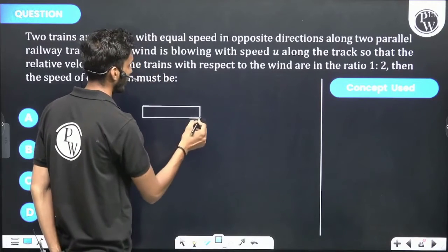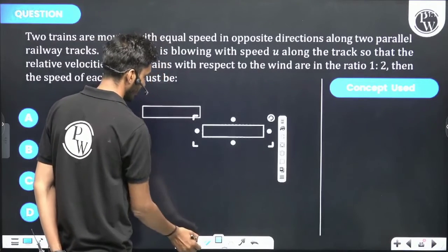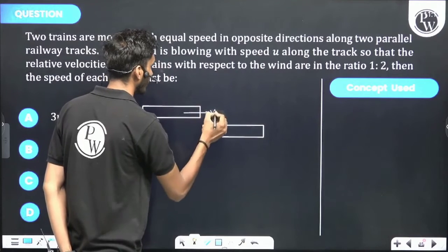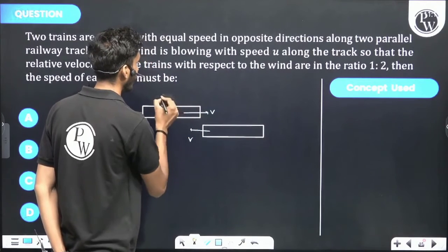I have to say that this train is in opposite direction. This velocity is v and this velocity is v. I have to say that wind is going to be u.